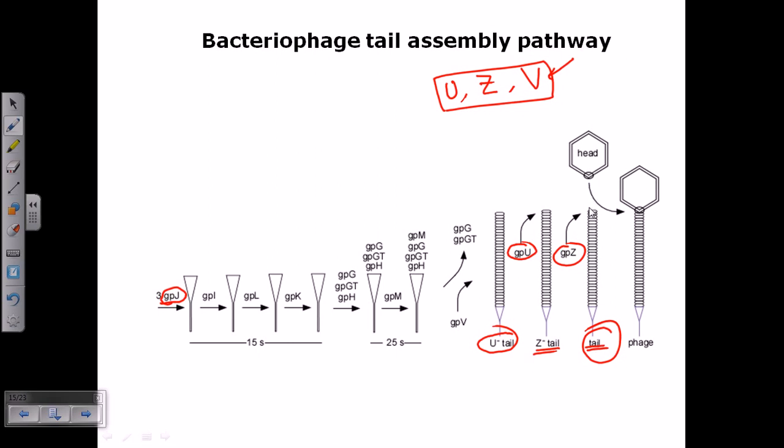The tail and head will be attached randomly by the Brownian motion theory. They just attach there and then the fully matured phage is ready to infect, ready to be lysed out.